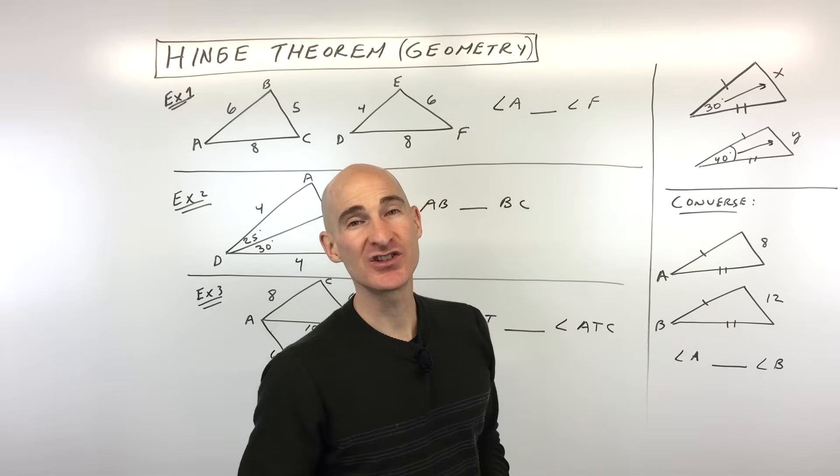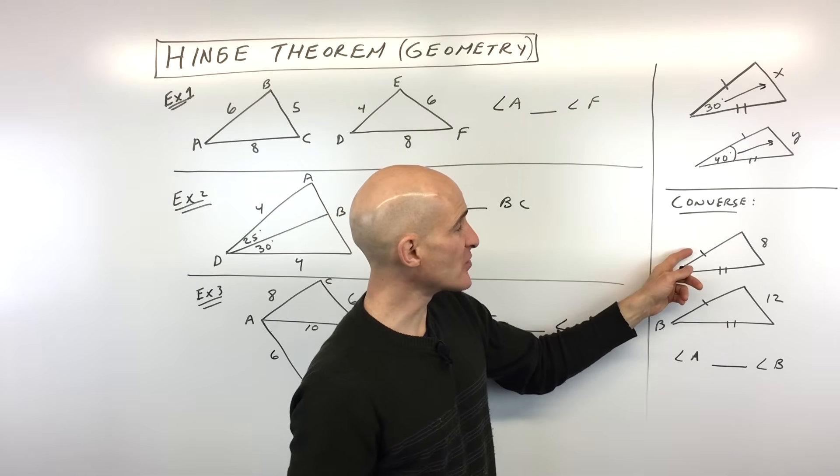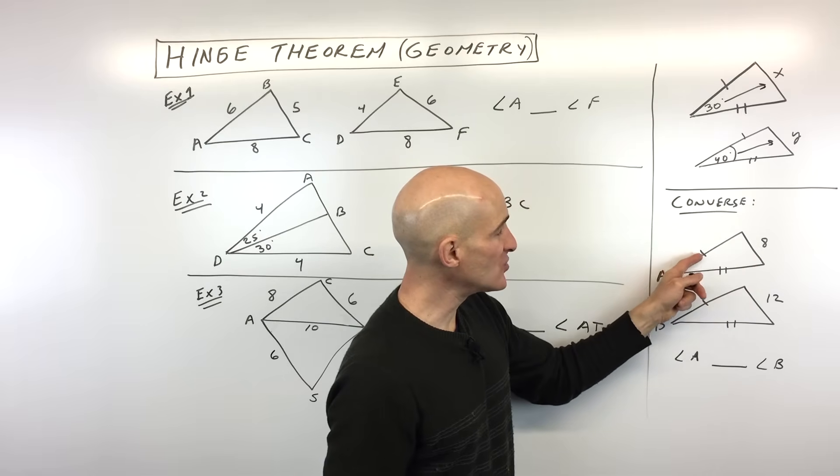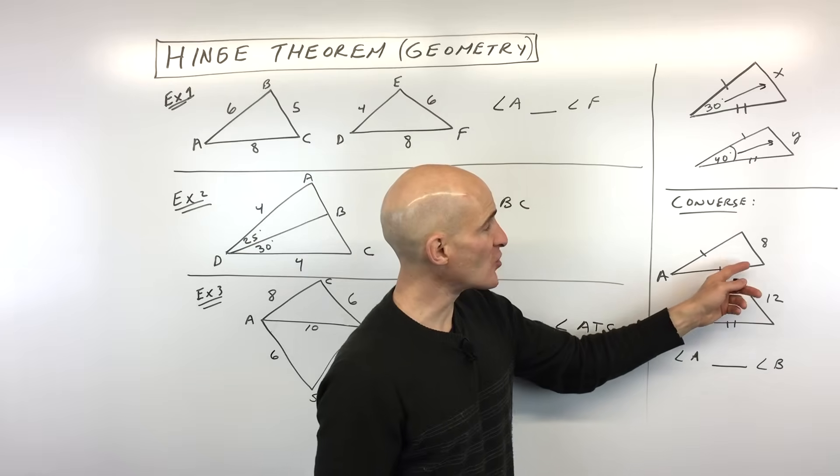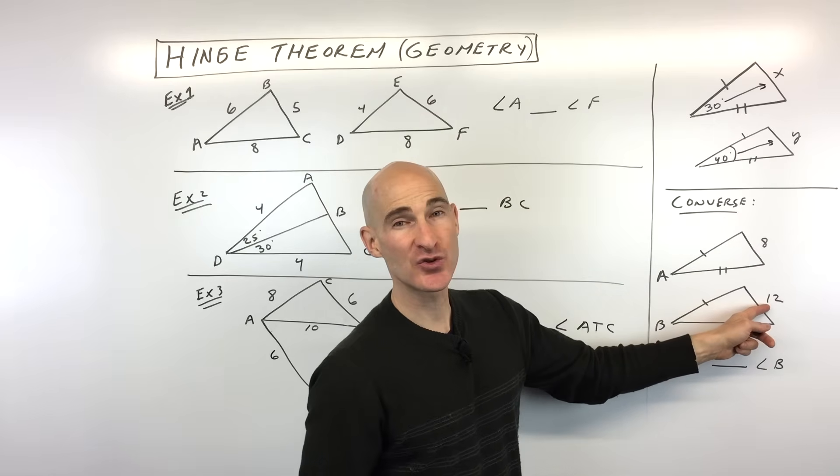So with the converse of the hinge theorem, what we're talking about here is they're actually giving us three side lengths. Notice that these two side lengths are congruent to these two side lengths, but what's different between these two triangles is that, see how this side is 8, this side is 12.